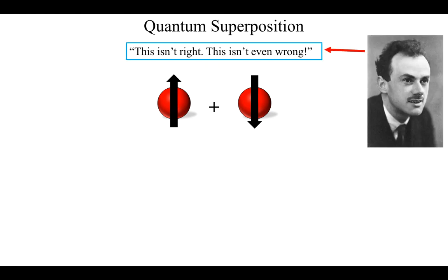Paul Dirac, to describe superposition, famously said: this isn't right, this isn't even wrong.